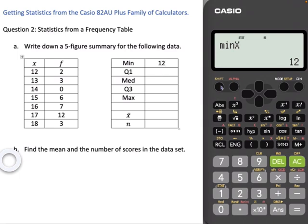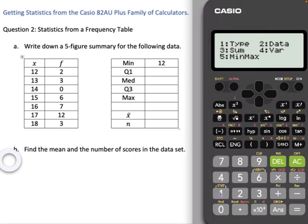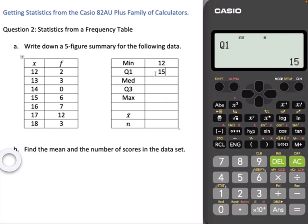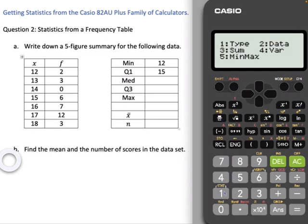Q1, Shift, Stat, MinMax. It's always Shift, Stat, MinMax for a five-figure summary. Q1, that's Option 3 up here. So 3 equals, so that's 15, is our Q1. Q2, which is the median, so Shift, Stat, MinMax, and 4 for median, or Q2. That's equal to 16.